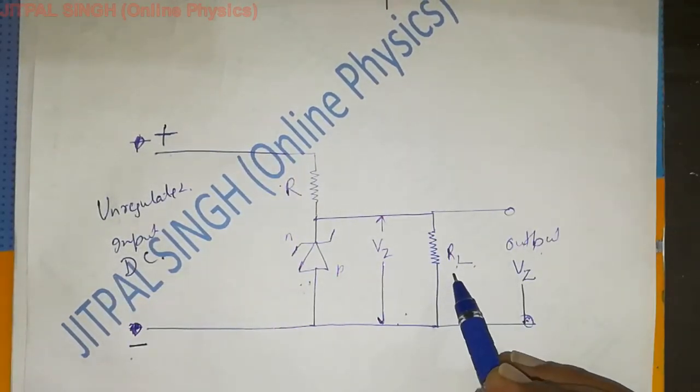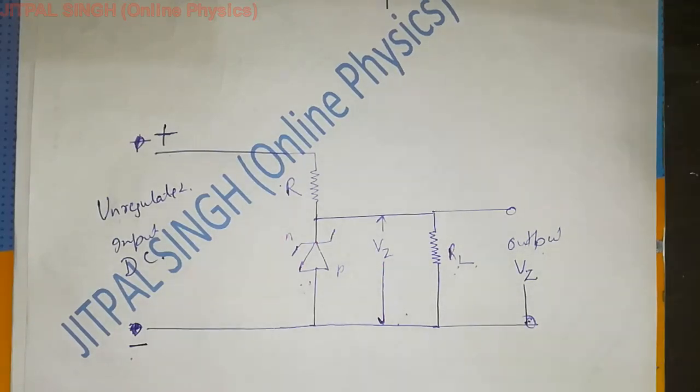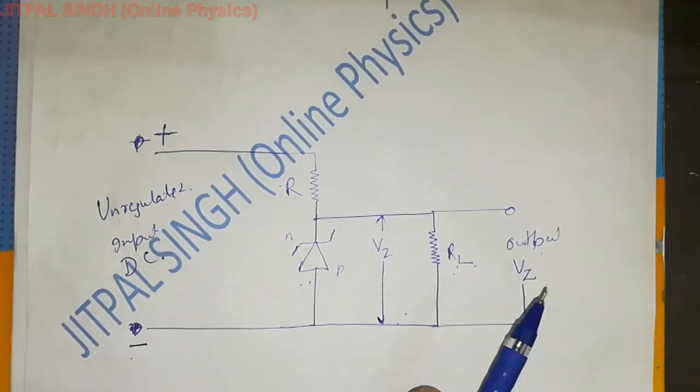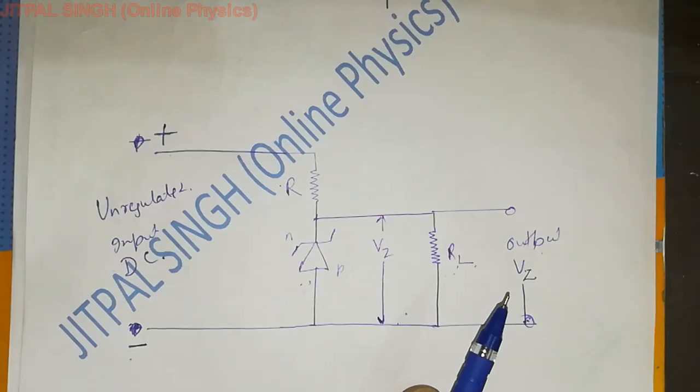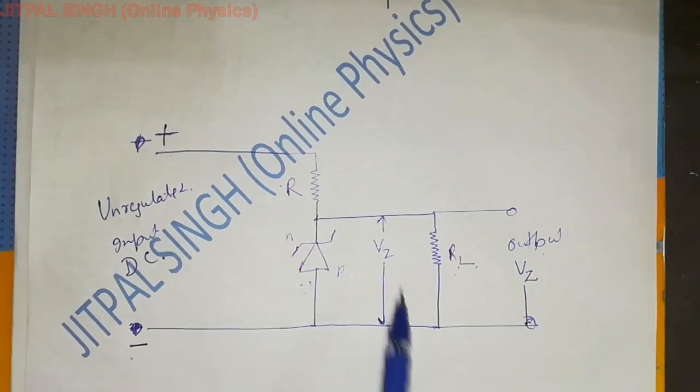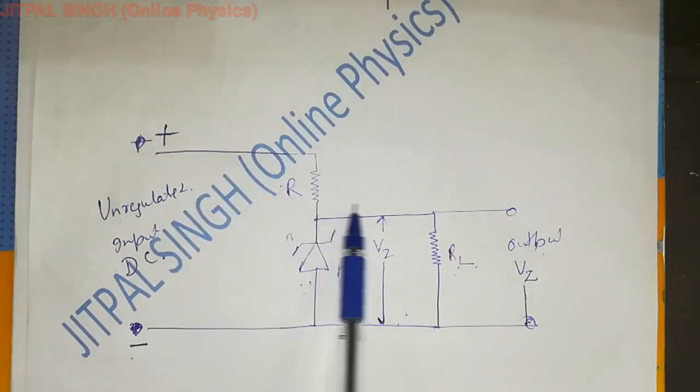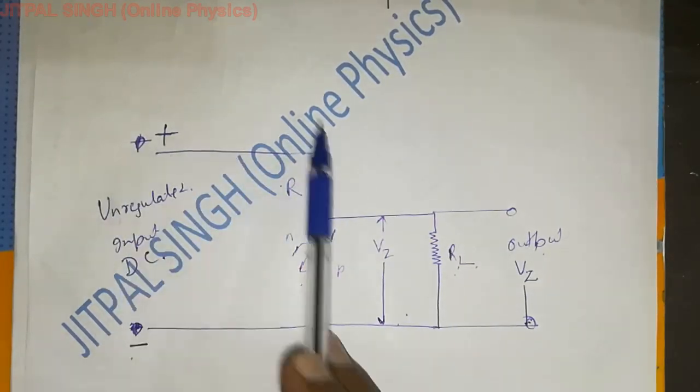I hope this is clear. For load resistance, we will have 38 volts. Load resistance gets damaged above 40 volts. It doesn't get damaged below. At less voltage, device doesn't get damaged. At more voltage, it gets damaged. We have to maintain it so it doesn't go above that. When it is 38, 39, this Zener diode won't create any problem. It remains quiet. Current comes and goes like this.